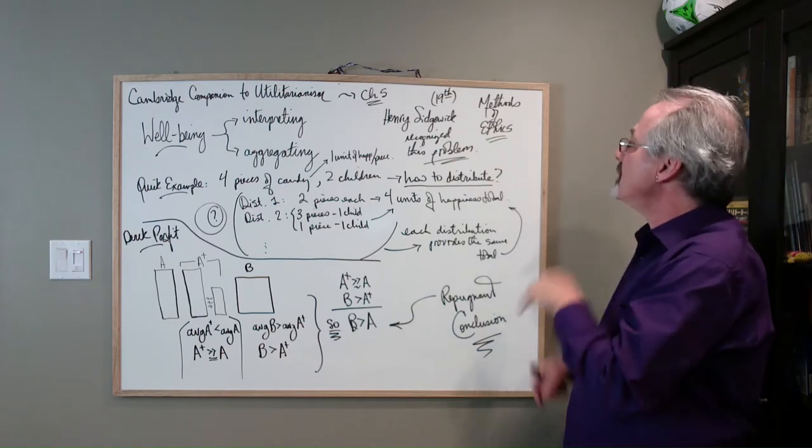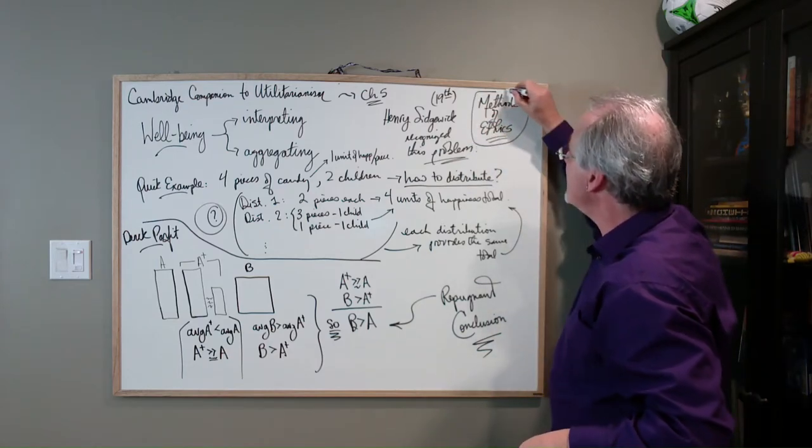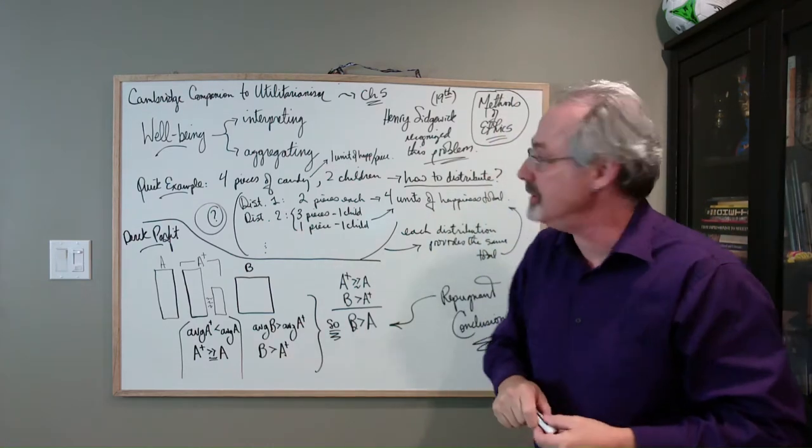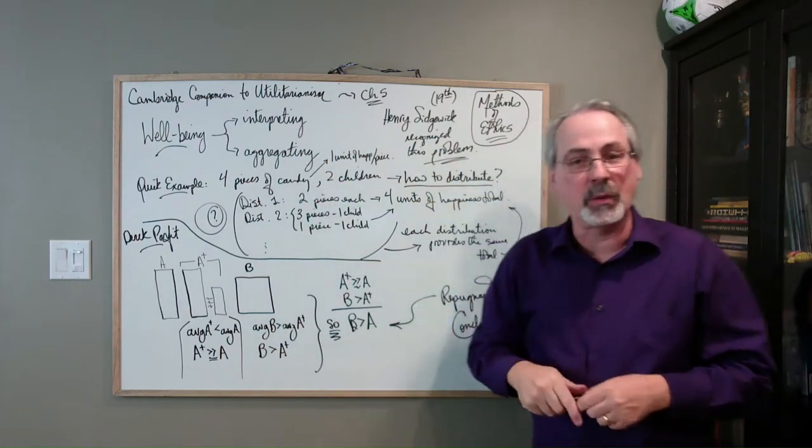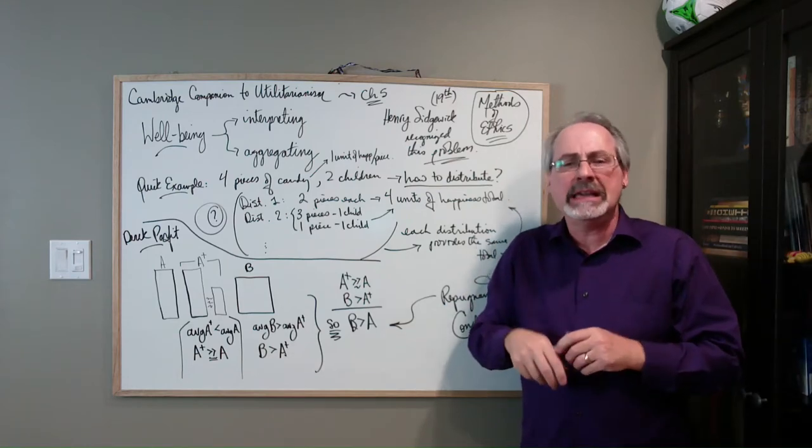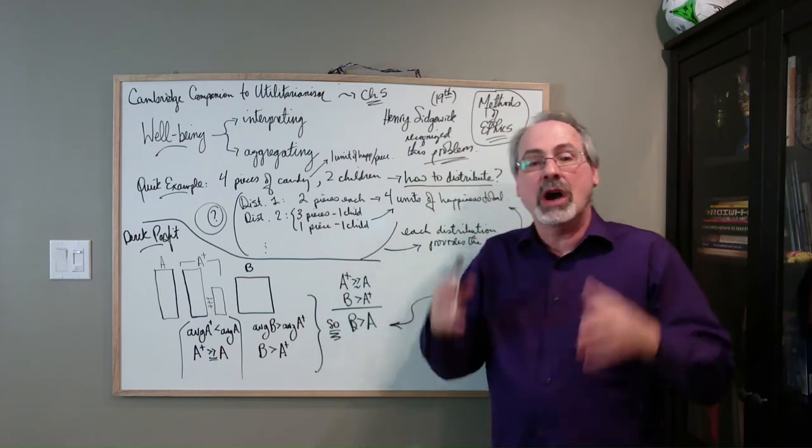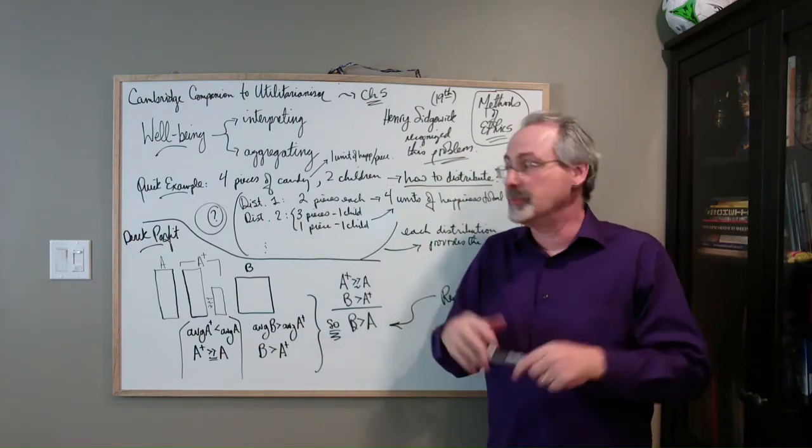published an incredibly important book called The Methods of Ethics in seven editions. But in any case, Sidgwick actually recognized this problem of well-being in terms of the aggregation of it, and he used different language. He talked about how to distribute a quantum of happiness over a group, and that there were problems with this.